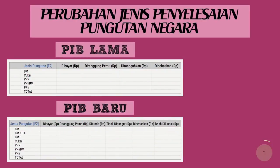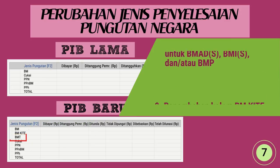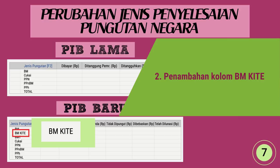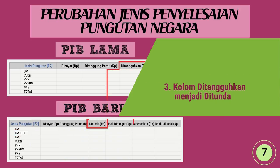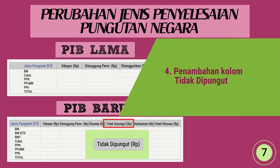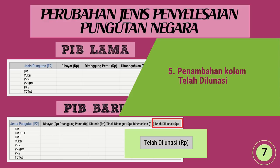Perubahan jenis penyelesaian utang negara: (1) Penambahan kolom biaya masuk tambahan (BMT) untuk BMADS, BMIS, BMTPS, dan/atau BMP. (2) Penambahan kolom biaya masuk IT yang diisi untuk pengguna fasilitas KITE yang mendapat pengembalian; untuk BM yang dibebaskan tetap masuk kolom BM dibebaskan. (3) Kolom ditangguhkan menjadi ditunda, sesuai dengan istilah undang-undang dan PMK penundaan biaya masuk. (4) Penambahan kolom tidak dipungut, misalnya untuk fasilitas cukai dan perpajakan. (5) Penambahan kolom telah dilunasi, misalnya cukai dengan pelekatan pita cukai.